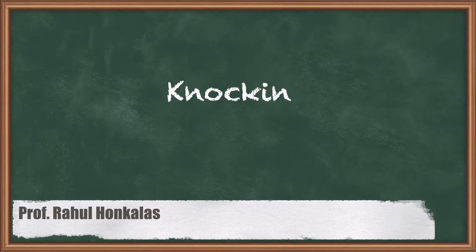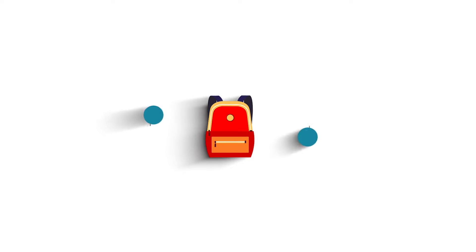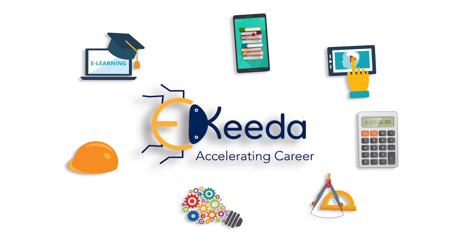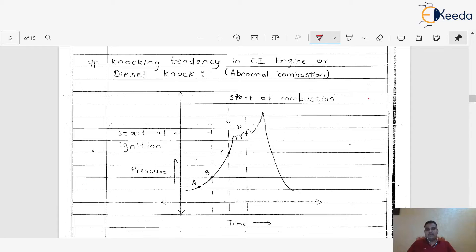Dear friends, in this video we are going to discuss the knocking tendency of a CI engine. In the last few videos we discussed about different things related to the CI engine, including the different stages of combustion, the delay period and its types — that is, the physical delay period and the chemical delay period. So in this video we are going to discuss a very important part of this unit: the knocking tendency of a CI engine.